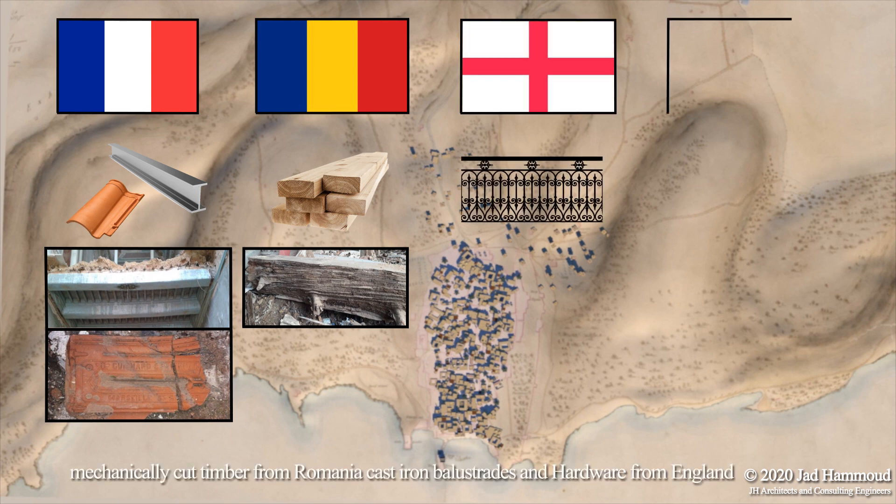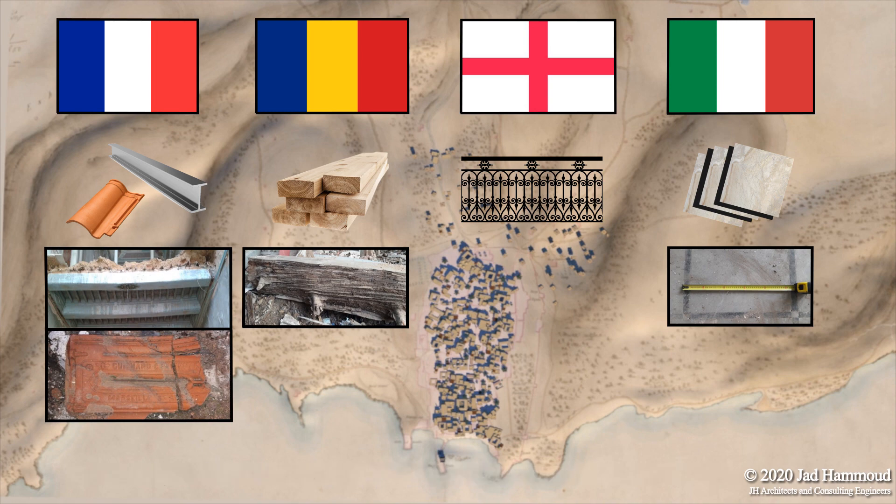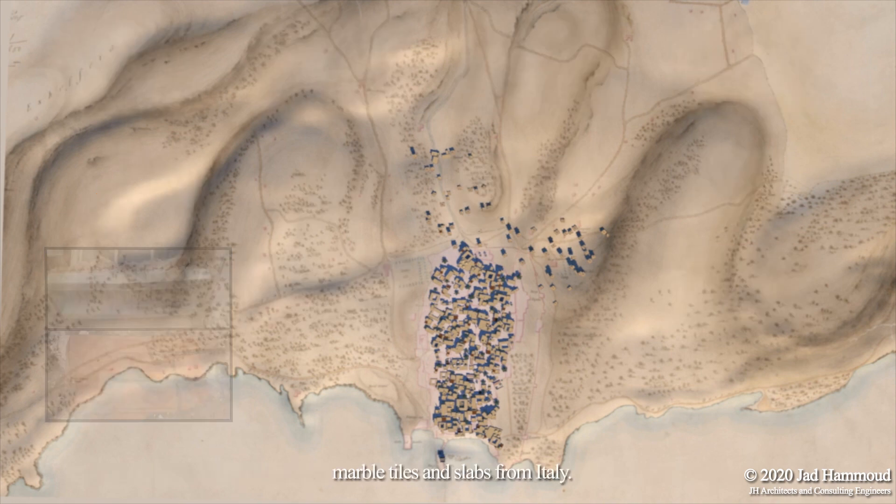Mechanically cut timber from Romania, cast iron balustrades and hardware from England, and marble tiles and slabs from Italy.